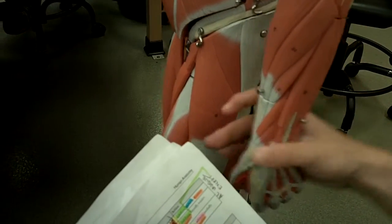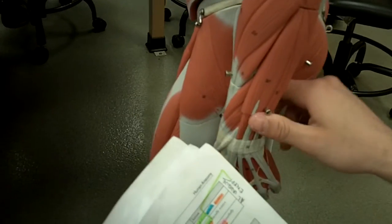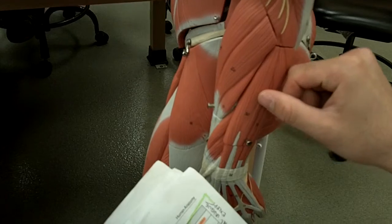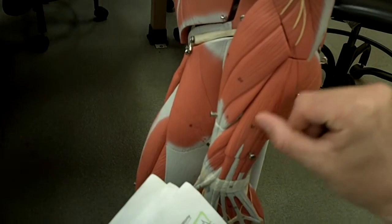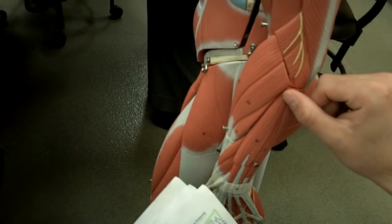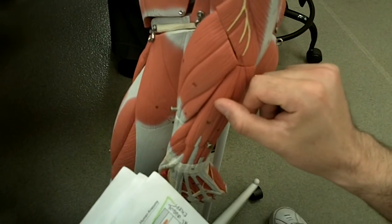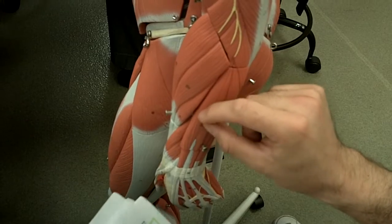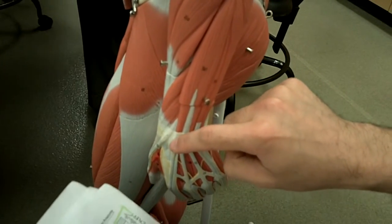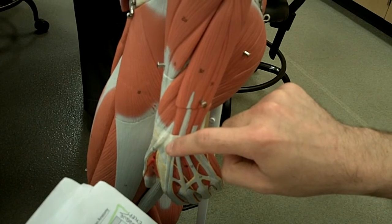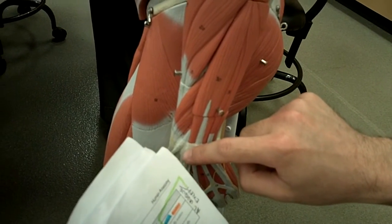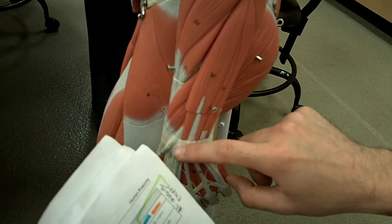The next muscle is the extensor digitorum—think digits, fingers—right here. This originates on the lateral epicondyle of the humerus and inserts on the distal phalanges two through five. It comes down here and inserts on the distal phalanges two through five. Its action extends the fingers and the wrist.